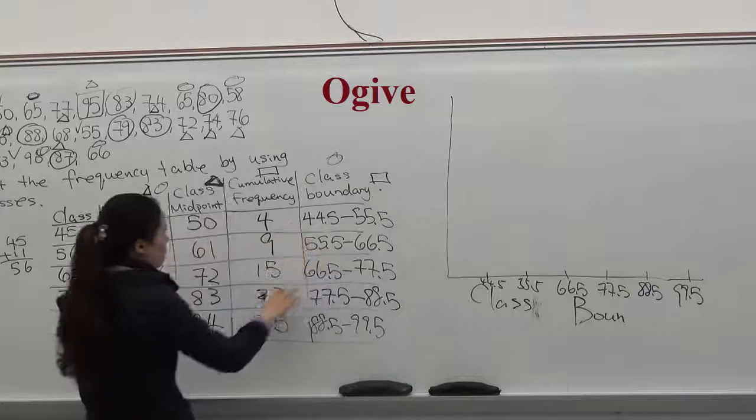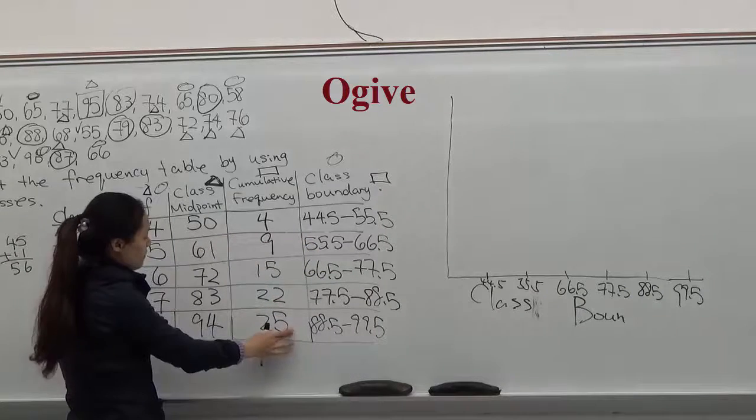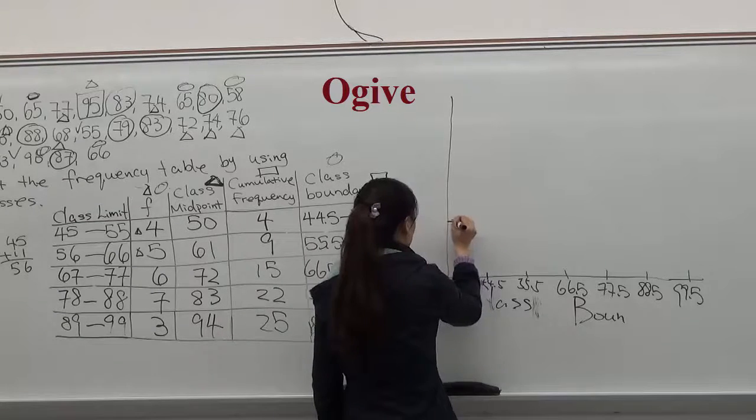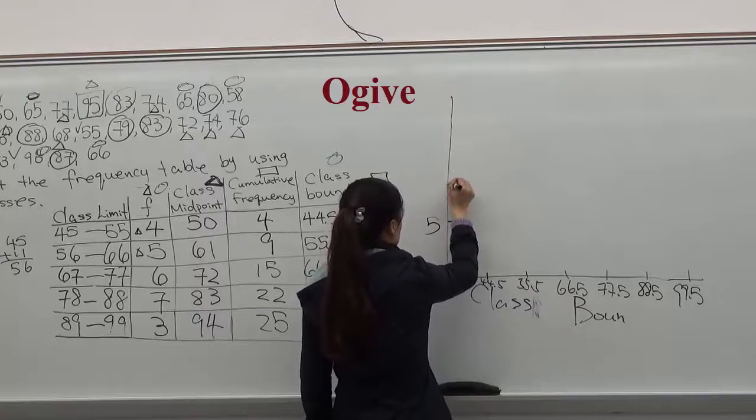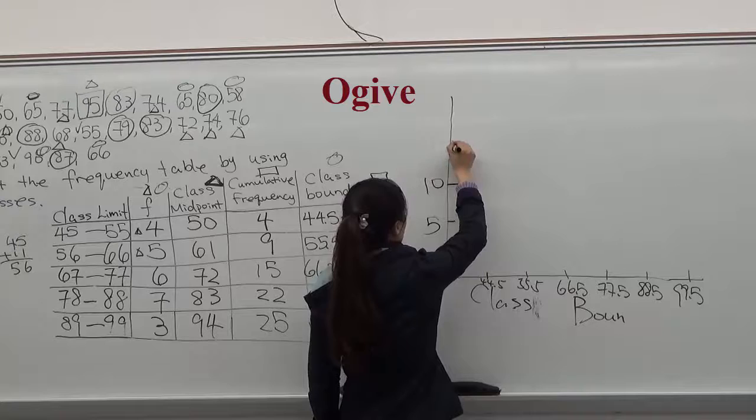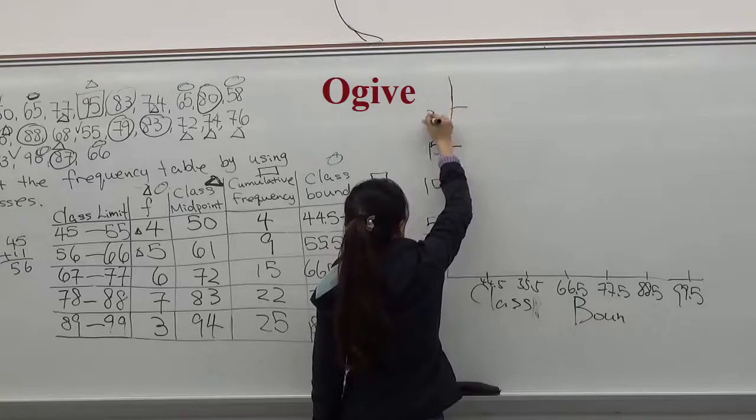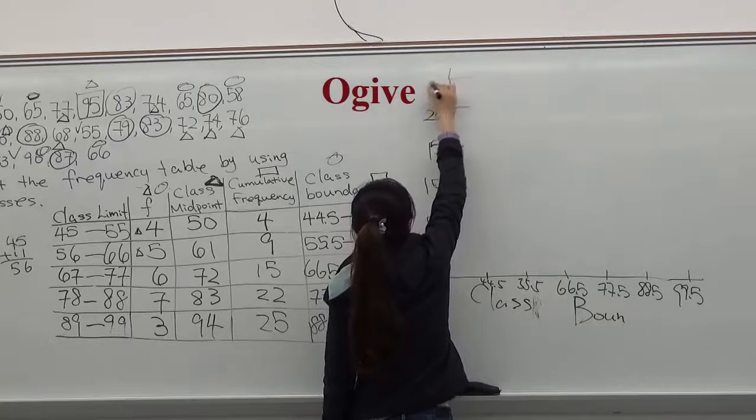The highest cumulative frequency we have is 25. So I'm going to use 5 for each interval. 5, 10, 15, 20, and 25.